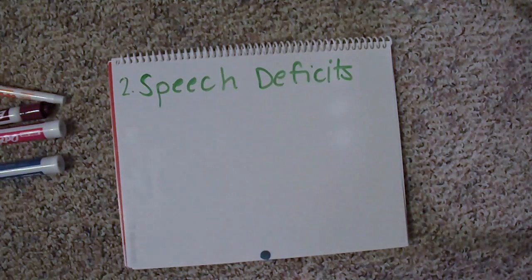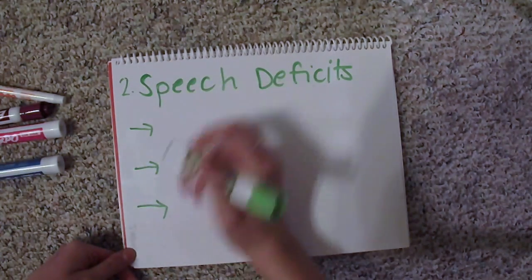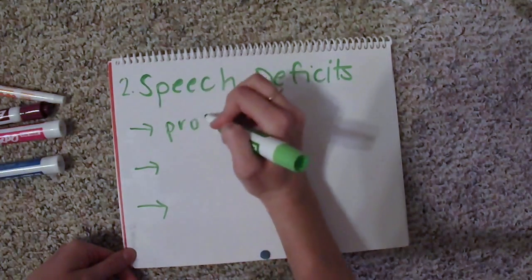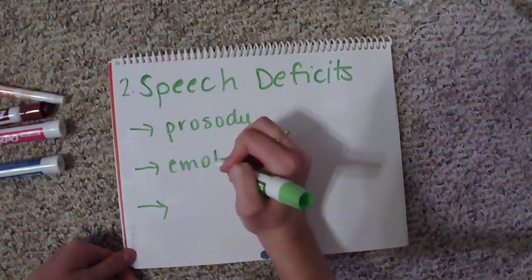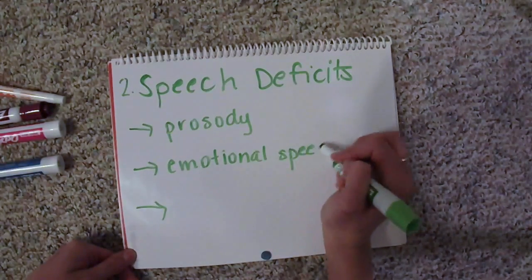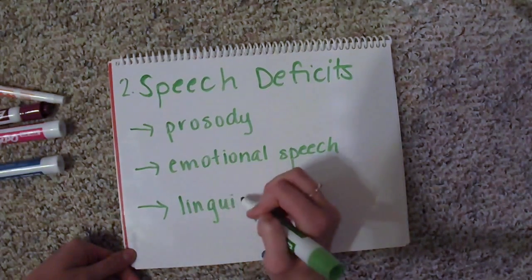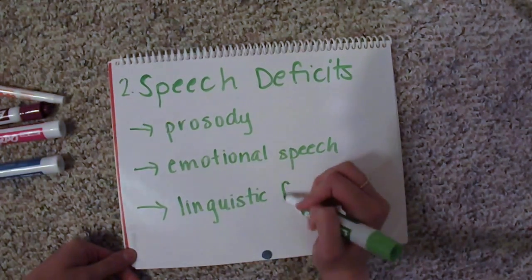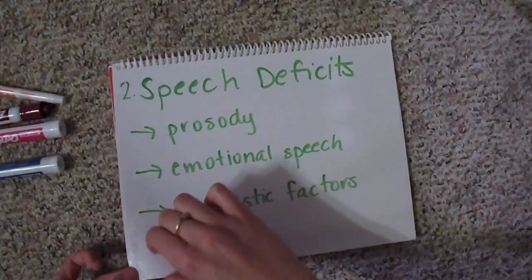Speech can also be damaged in many ways when a patient has RHD. Some of the damage can include impairments in prosody, understanding and using emotional speech, and understanding and using linguistic information, such as recognizing different sentence types or stress.